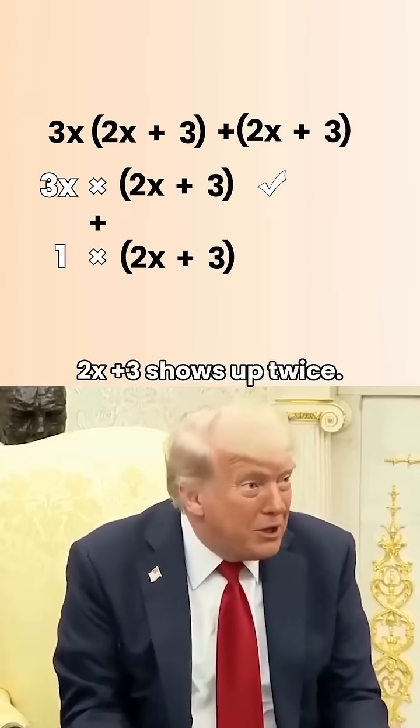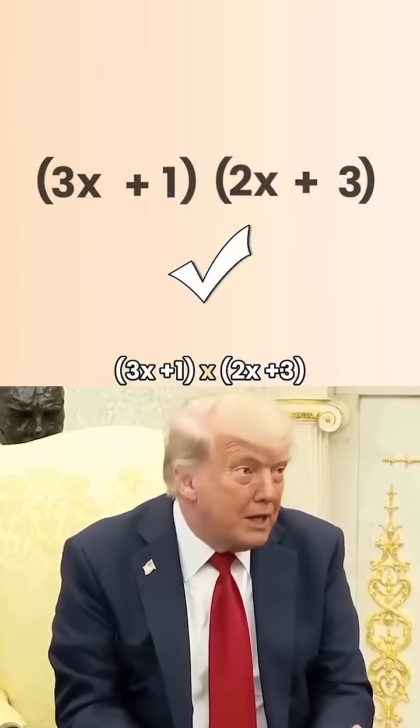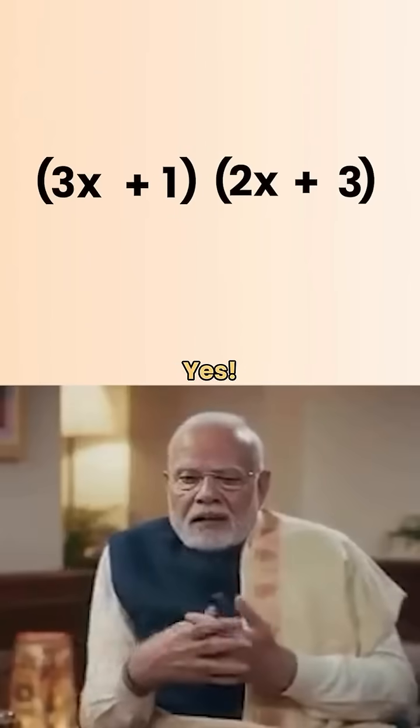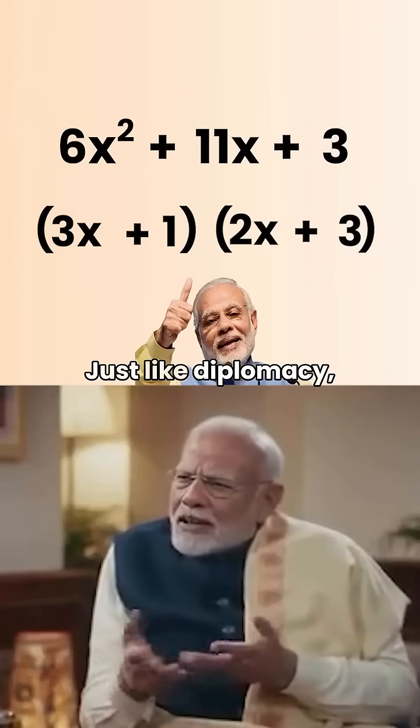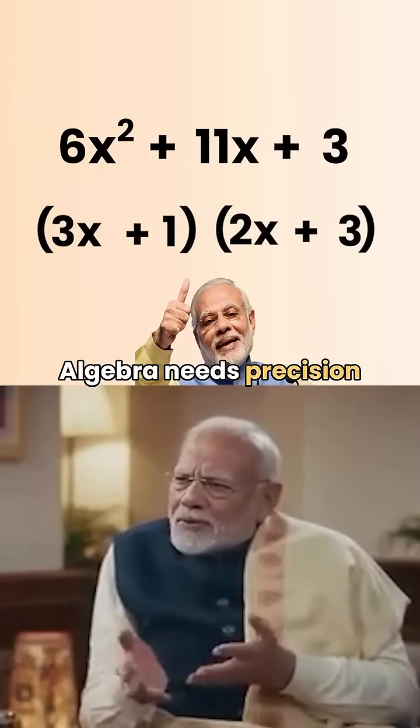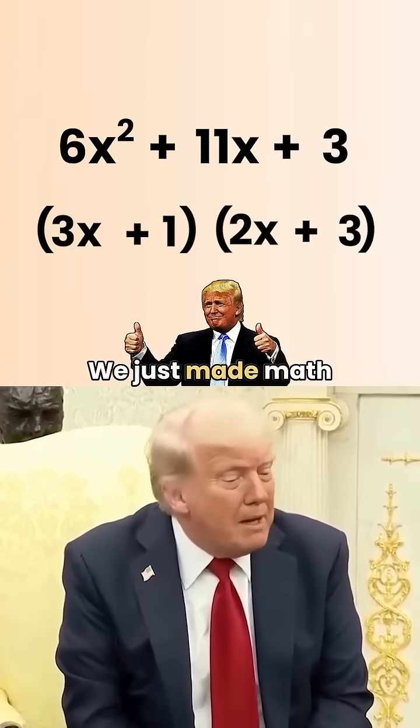There it is. 2x plus 3 shows up twice. We love consistency. So we've got 3x plus 1 times 2x plus 3. Right? Yes, that is the final factorized form. A perfect expression. Just like diplomacy, algebra needs precision and collaboration. Couldn't agree more, PM Modi. We just made math great again.